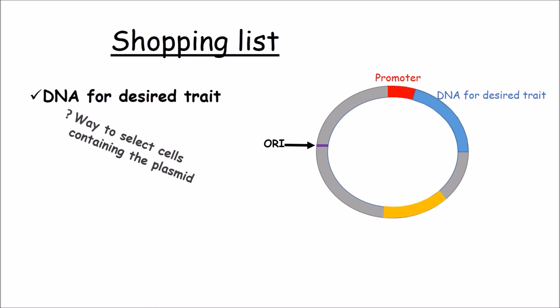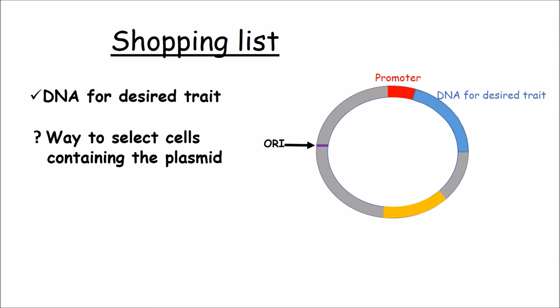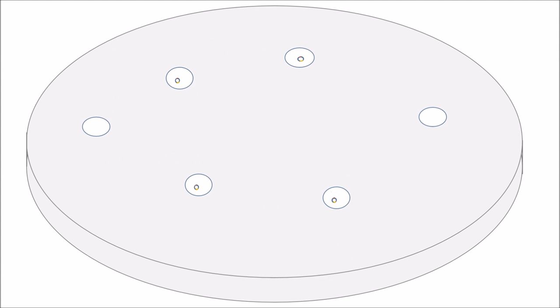But how are we going to tell if the DNA is in the cell? The most common strategy is to add an antibiotic resistance gene to the plasmid. If the bacteria is grown on plates containing the antibiotic, only the cells that contain the plasmid will grow.